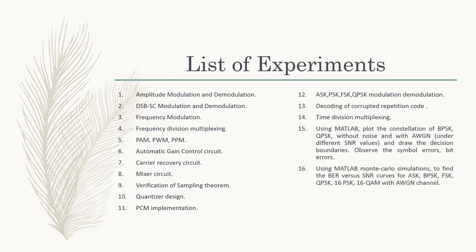The 16th experiment is using MATLAB Monte Carlo simulations to find the bit error rate versus signal-to-noise ratio curves for ASK, BPSK, FSK, QPSK, 16PSK, and 16QAM with AWGN channel.